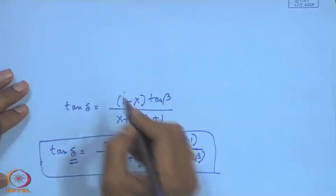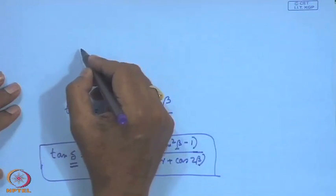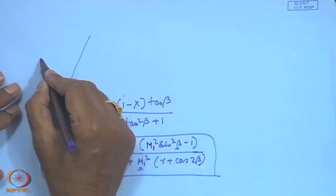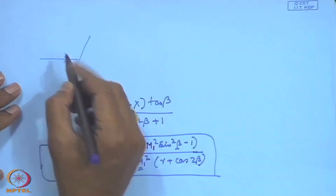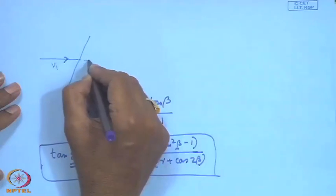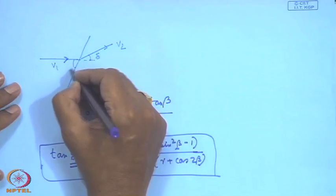Good morning and welcome to this session. Last class we were discussing the oblique shock wave. To recap: an oblique shock wave deflects the incoming velocity V1, where the angle of deflection is delta and the shock wave angle is beta.